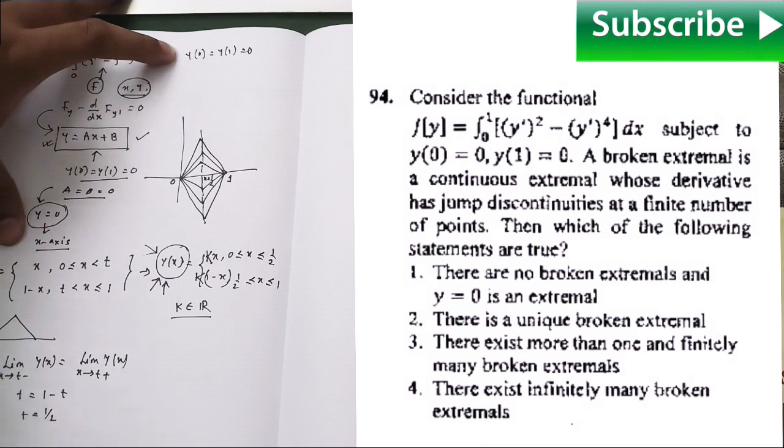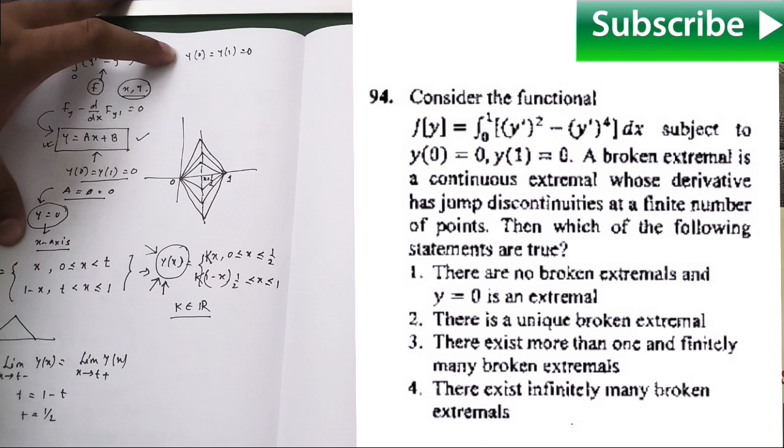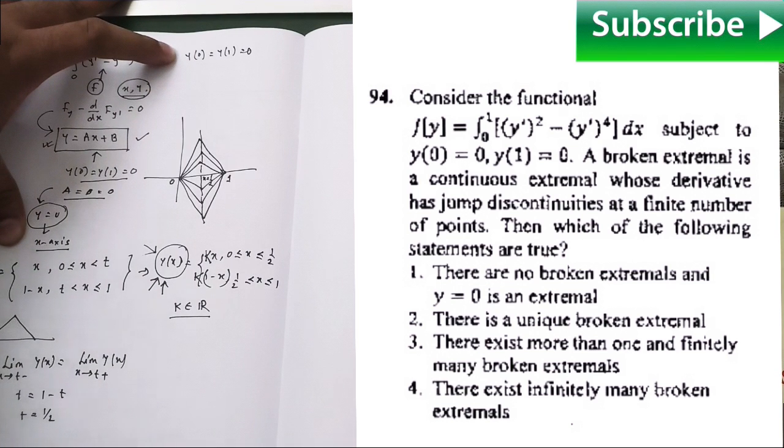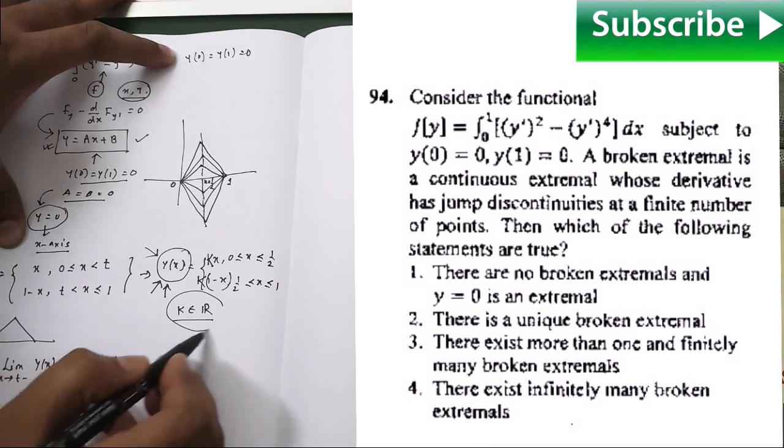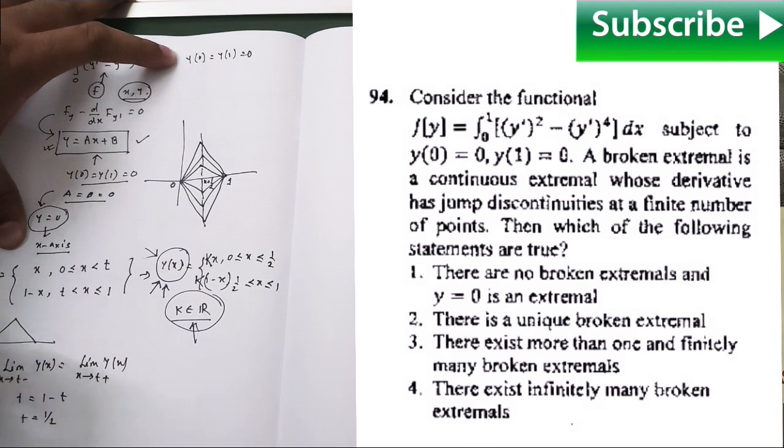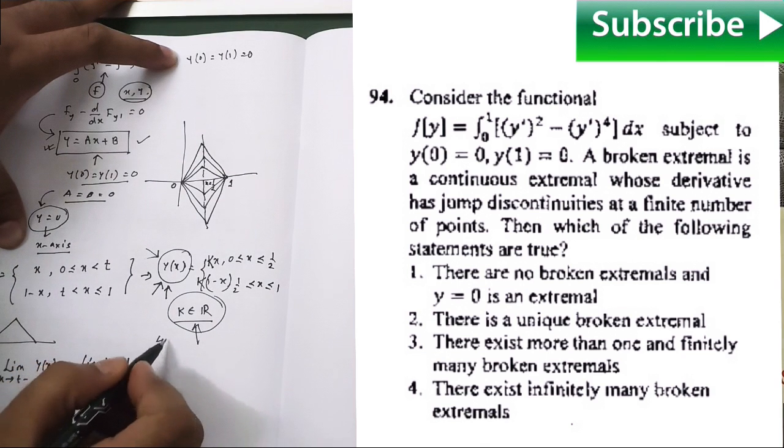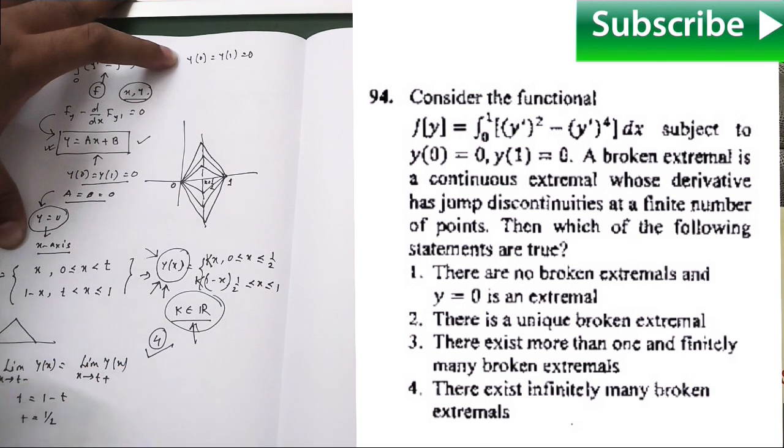Thus, your second and third options are discarded. Because second option says that unique broken extremal, it is false. And third option says that more than one but finitely many. But here, as your k belongs to the real numbers, the number of extremals is going to be infinite. So third option is also false. And finally, your fourth option is the correct one.